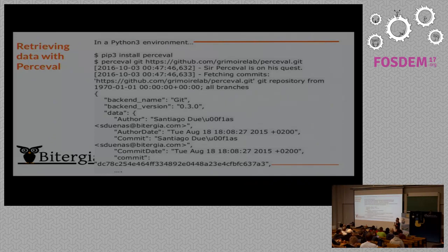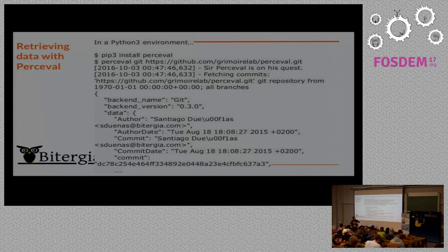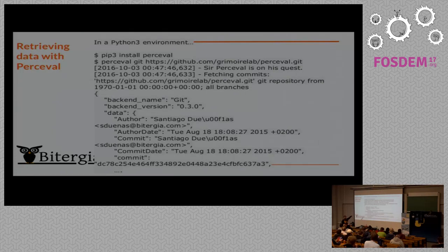It's quite simple — it's Python 3. You get a Python 3 environment, install with pip using `pip install perceval`, and you have the latest version. Then you just run it. Perceval is a Python module but also a script, so you can run the script directly. In this example, I run it with the Git backend on a URL which is the Git repository of Perceval itself. It starts fetching everything — clones the repository, runs git log with various options, and starts producing JSON documents with the information in the repository.